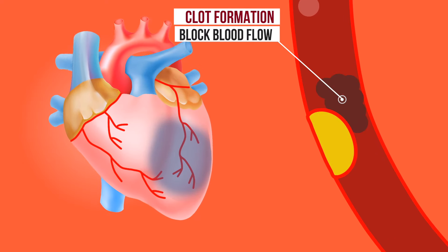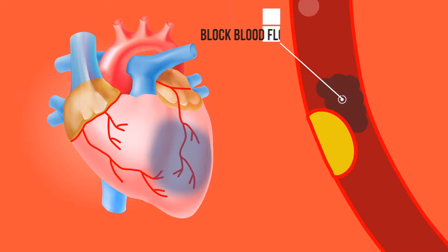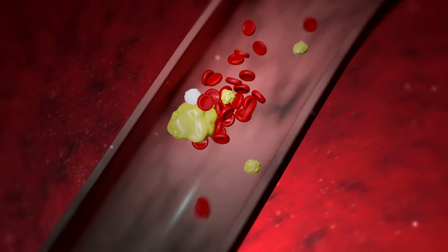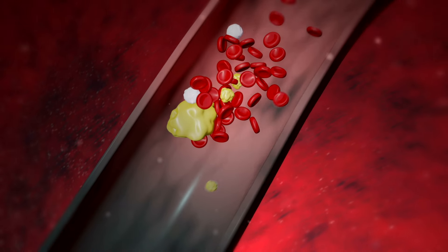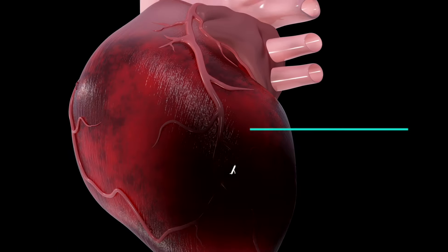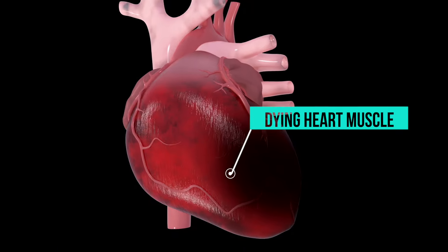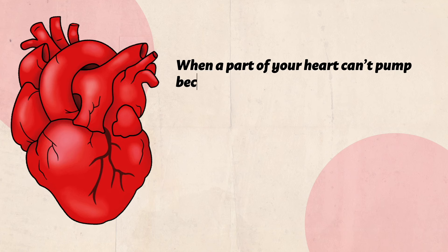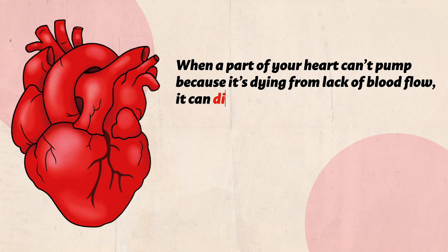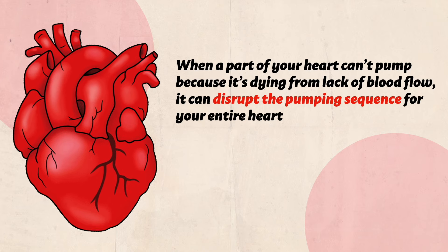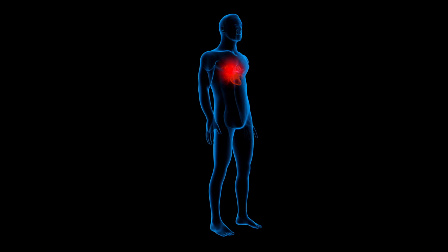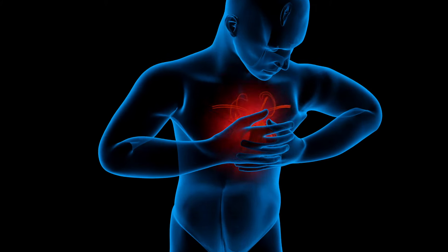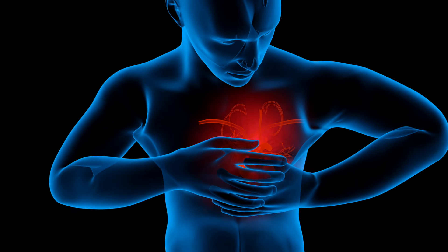Sometimes a plaque can rupture and form a clot that blocks the blood flow. A lack of blood flow, typically caused by blockage of a coronary artery, can damage or destroy a part of the heart muscle. When a part of your heart can't pump because it's dying from lack of blood flow, it can disrupt the pumping sequence of your entire heart. That reduces or even stops blood flow to the rest of your body, which can be deadly if not addressed in time.